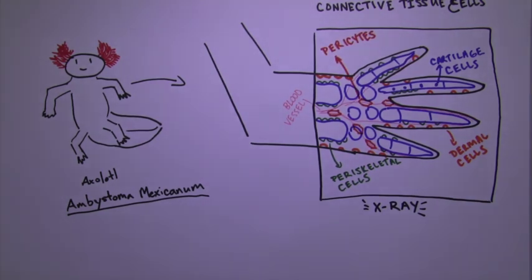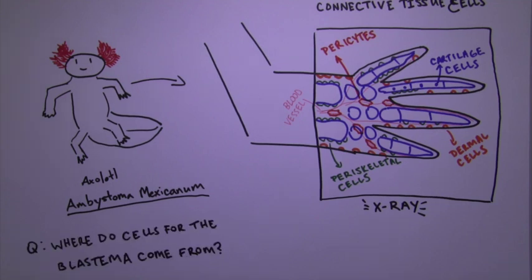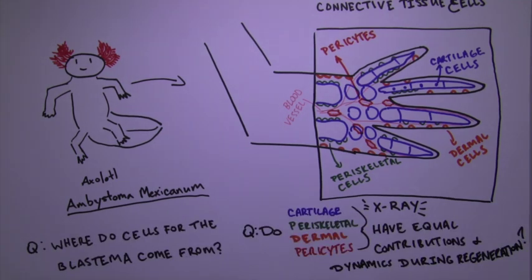One long-standing question has been: where do cells for the blastema come from? Do cells from these different tissue compartments have equal contributions and dynamics during regeneration?